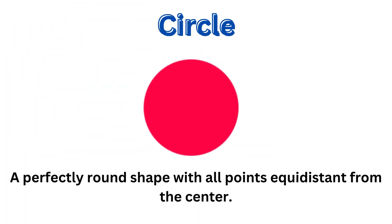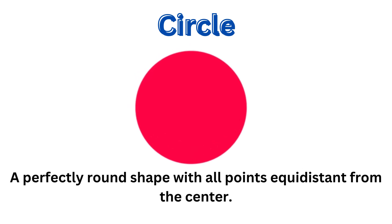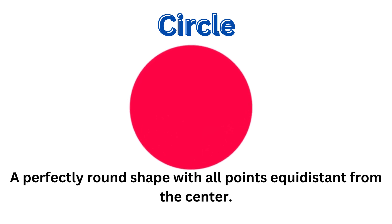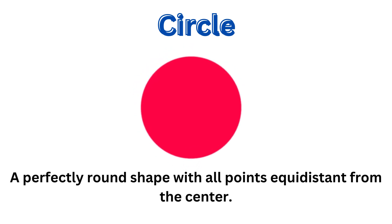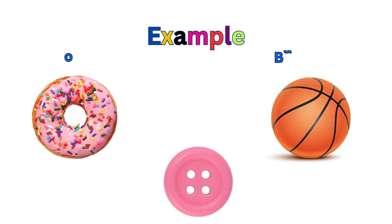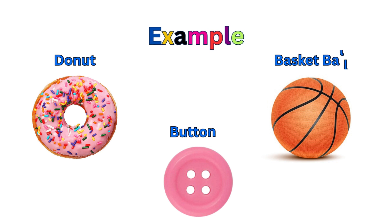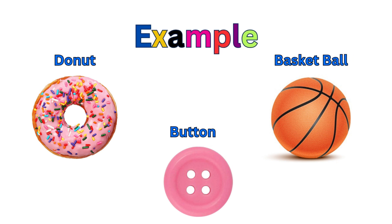This shape is a circle — a perfect round shape with all points at equal distance from the center. Examples are a donut, a button, and a basketball.